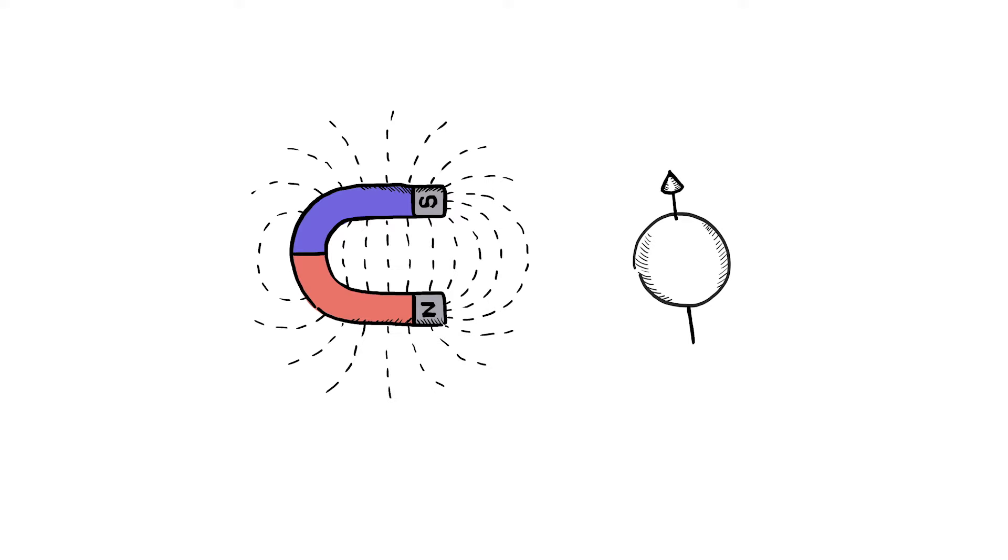Protons have magnetic properties. When a magnet is present they interact with the magnetic field. MRI scanners use magnets to measure a signal from protons in the body.